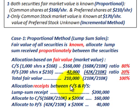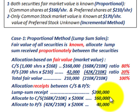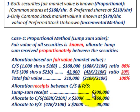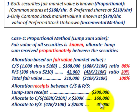To allocate the $200,000 lump sum receipt, multiply each ratio by the total receipt. For common stock: ($168,000 ÷ $210,000) × $200,000 = $160,000 allocated to common stock. For preferred stock: ($42,000 ÷ $210,000) × $200,000 = $40,000 allocated to preferred stock. This completes the proportional method allocation since we knew the fair value of both securities.